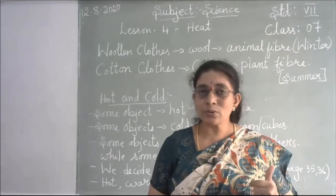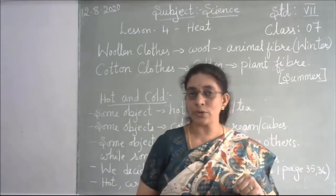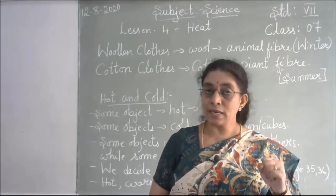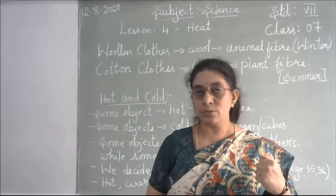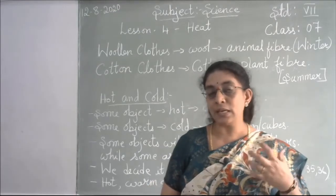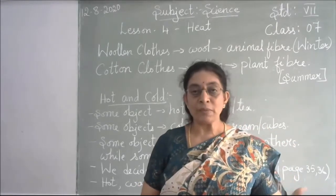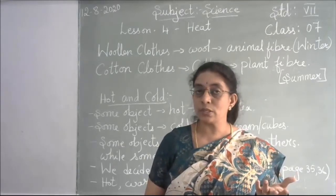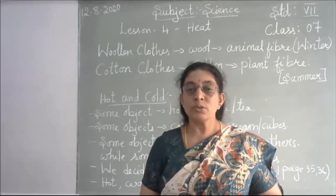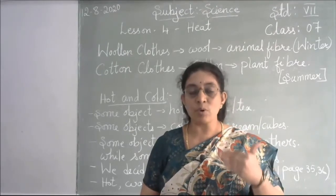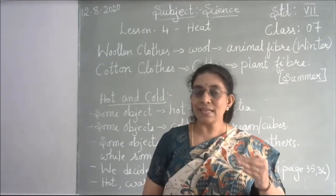Why do we use woolen clothes in winter and cotton clothes in summer? During winter, we use woolen clothes to keep our body warm — they don't allow the body to become cold. During summer, the temperature outside is already very hot, so we use cotton clothes and especially light-colored clothes to keep our body cool.